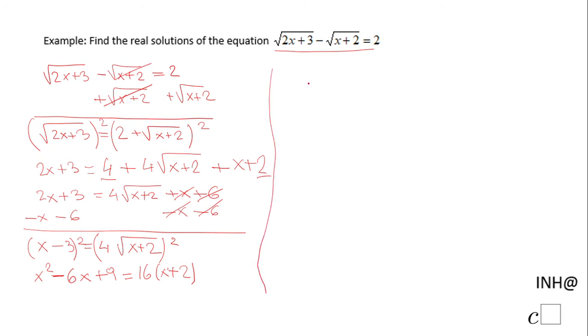Now we're going to use distributive property for the right side, and we have x squared minus 6x plus 9 equals 16x plus 32.